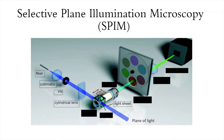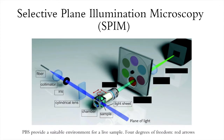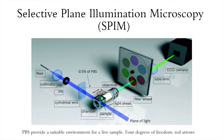The sample is mounted in a transparent, low-concentration agarose gel, e.g. PBS, and by using the four available degrees of freedom — three translational and one rotational, as shown in the diagram — the sample can be positioned such that the excitation light illuminates the plane of interest. We then use the objective lens, filter wheels, and tube lens to image the distribution of fluorophores in the illumination plane onto a CCD camera.